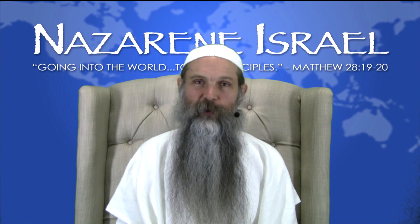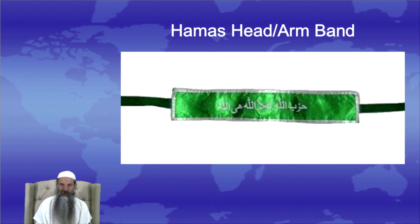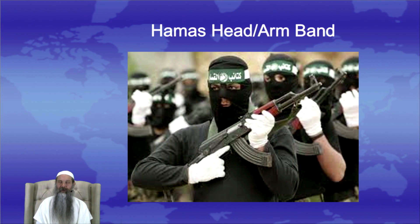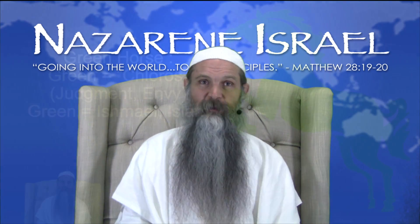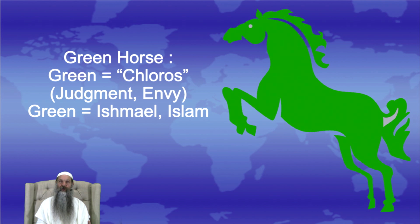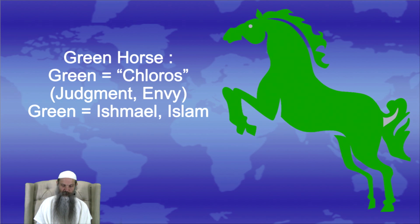If we had to use one color for Islam, we would go with green. This is a generic green-colored Saudi flag. Here's a Hamas item — it's dual purpose, either a headband or an armband. Here it's being worn as a headband, and we'll talk later about how the mark of the beast is worn either on the forehead or on the right arm — and we'll discuss this as one of the multiple marks of the beast.